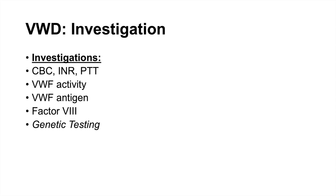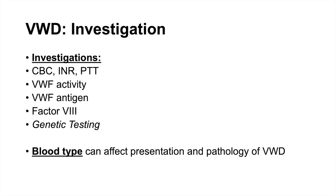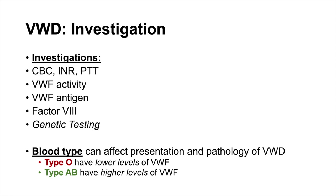Blood type must be considered when making the diagnosis of von Willebrand disease. Type O blood types have slightly lower levels of von Willebrand factor than other blood types on average — this doesn't mean they have the disease. Type AB individuals have higher levels. The patient's blood type must be kept in mind when interpreting results.